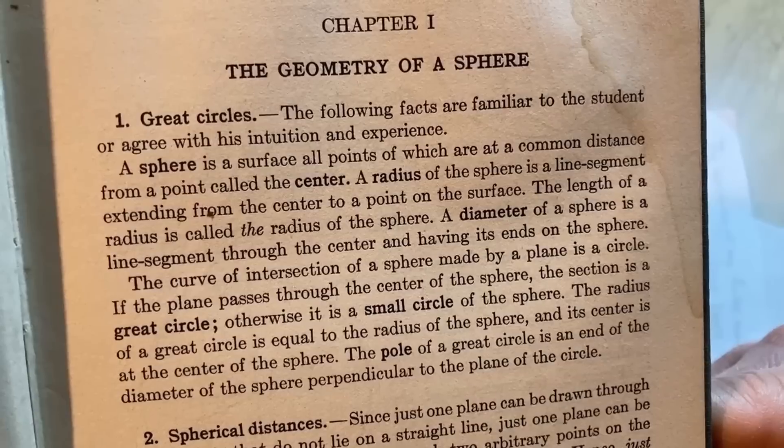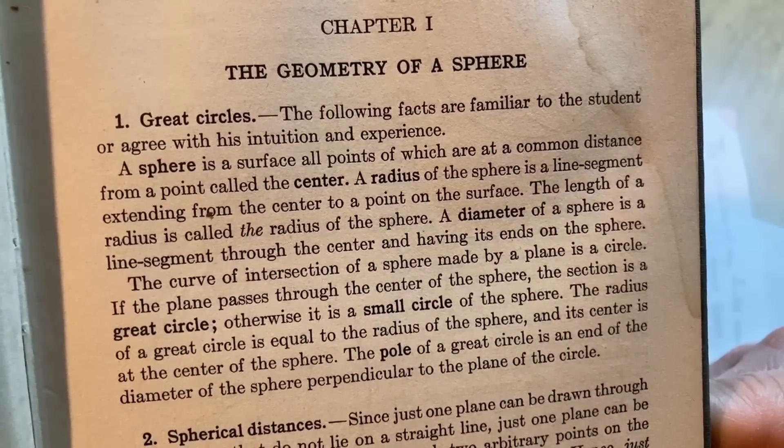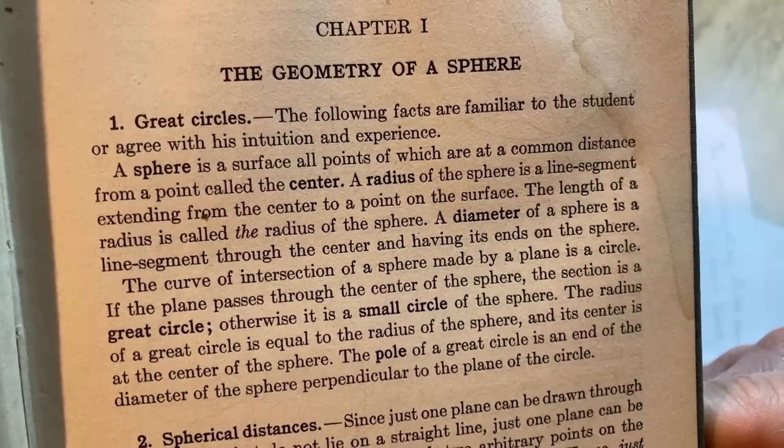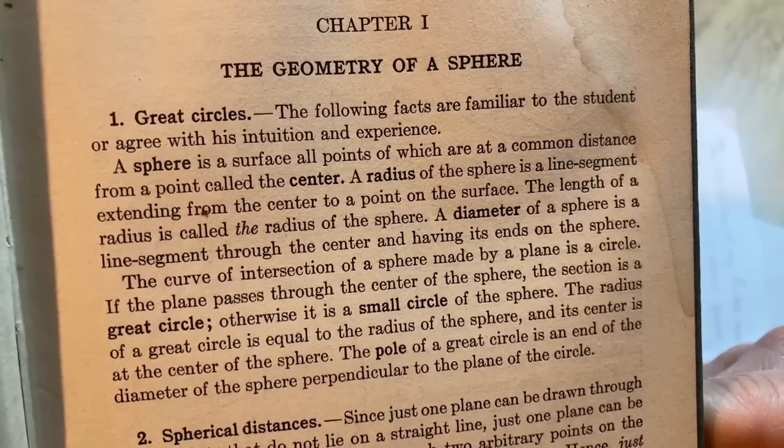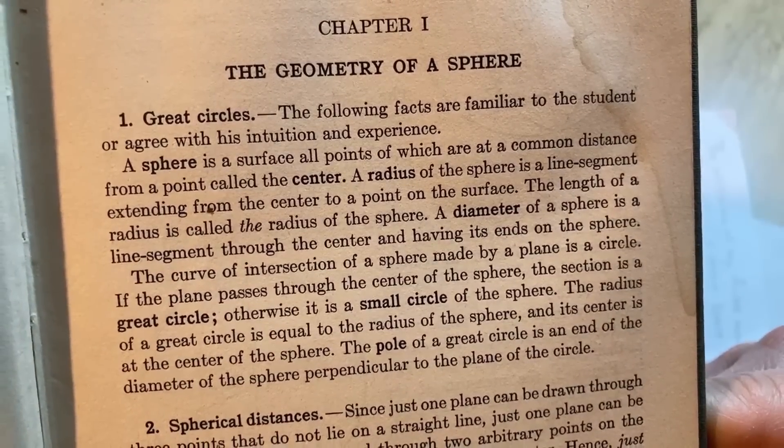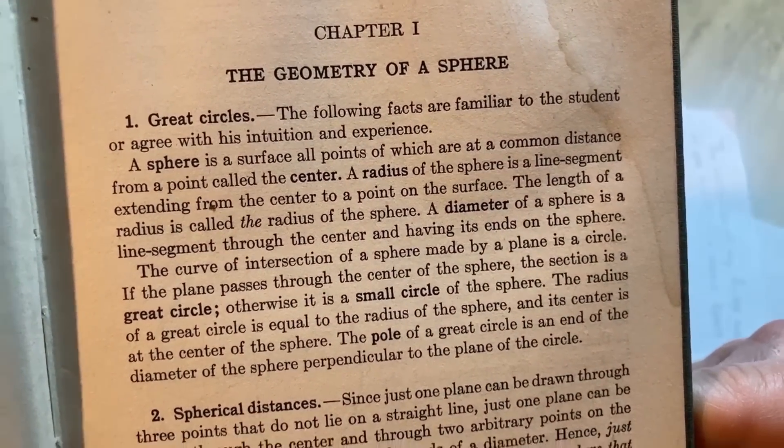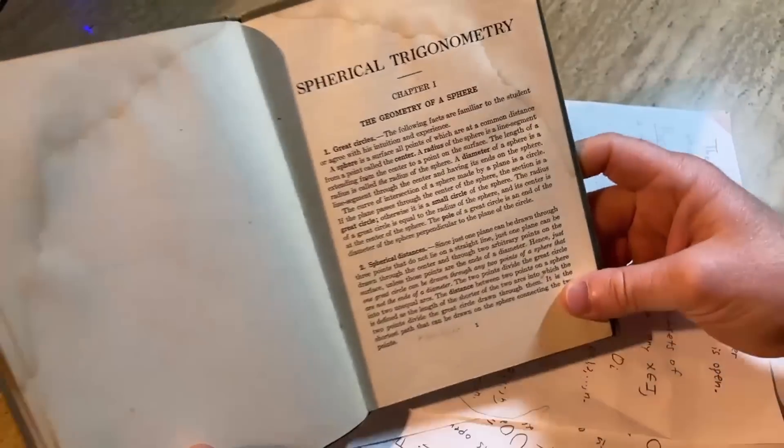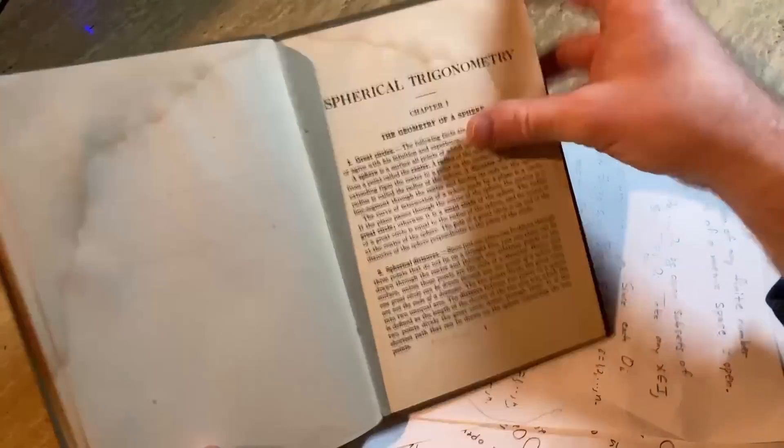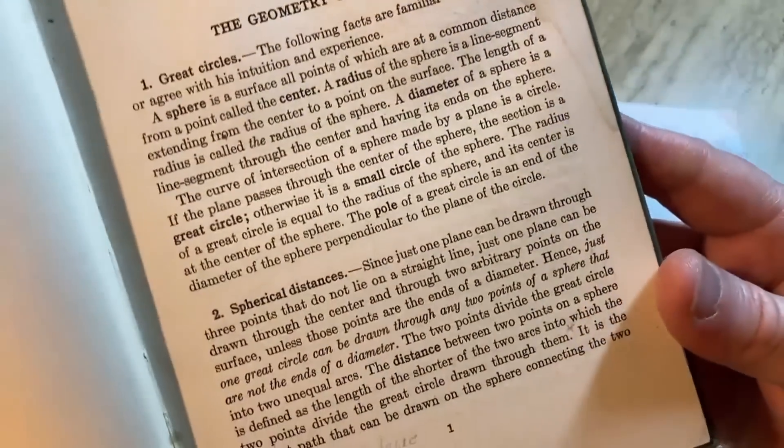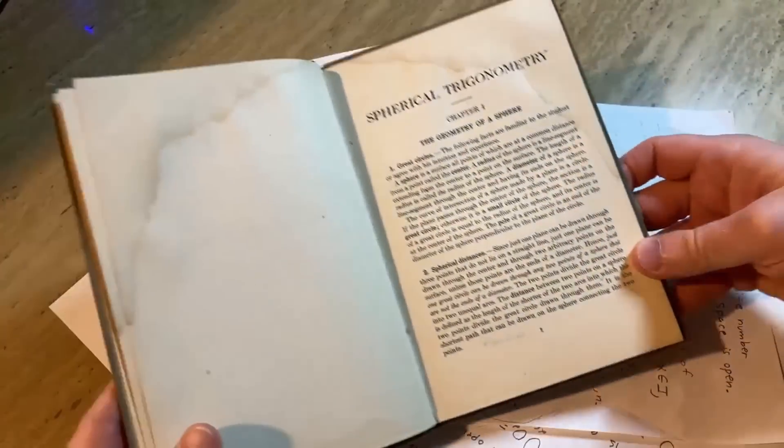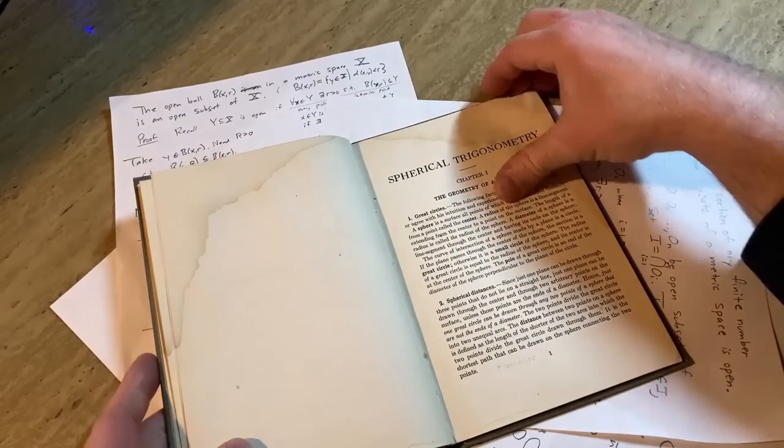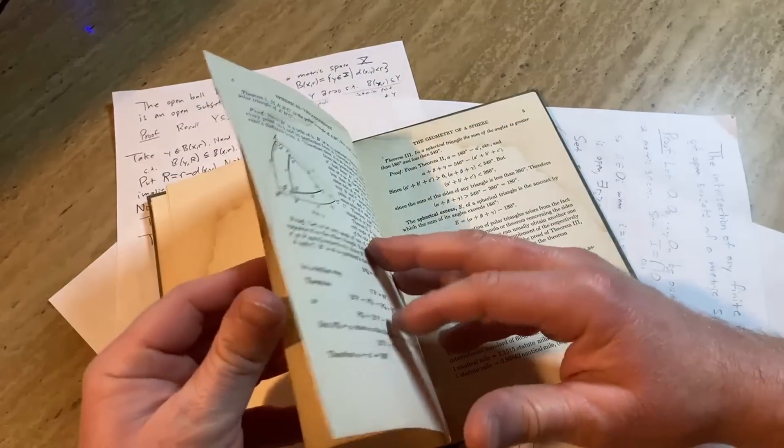Hopefully that made sense. To me it's pretty clear because, let's read that again, that last paragraph is key. It says the curve of intersection of a sphere made by a plane is a circle. And then it says if the plane passes through the center of the sphere, the section is a great circle. All the other ones are small circles. It talks about spherical distances, pretty cool stuff. So this used to be taught back in the day.